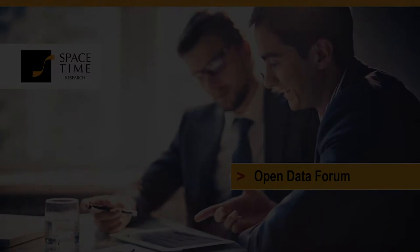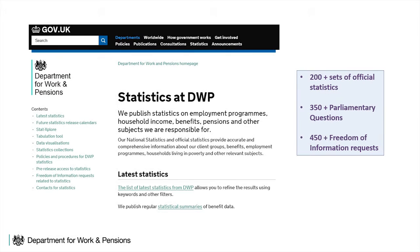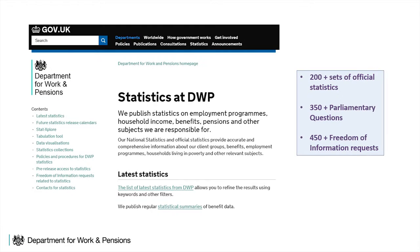We publish around about 200 sets of statistical information each year. We also have to answer queries about the statistics that we publish, so Members of Parliament can ask questions and ask for information, and we get a few hundred of those each year. Since the early 2000s, since the Freedom of Information Act in the UK, we've also been responsible for answering requests posed under FOI, and that number is increasing.